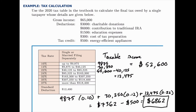So once again, for a full tax problem like this: start with the gross income, subtract the deductions — either itemized or standard, whichever is larger — and then divide the taxable income into those brackets. Find the correct percentage of each one and add them all up. And then if there are any tax credits, subtract them at the very end. The final result is the tax owed after all is said and done.